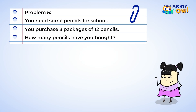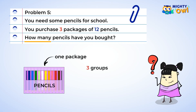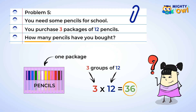It's back to school time, and you need some pencils for all the learning that will occur this year. There's a great sale on packages of twelve pencils, and you decide to purchase three packages. How many pencils have you bought? Well, each package is a group, and you bought three packages, or three groups. Each group has twelve pencils inside of it, so you have three groups of twelve. Now we can create a multiplication sentence: three multiplied by twelve is thirty-six.